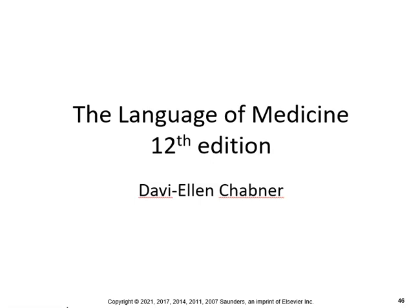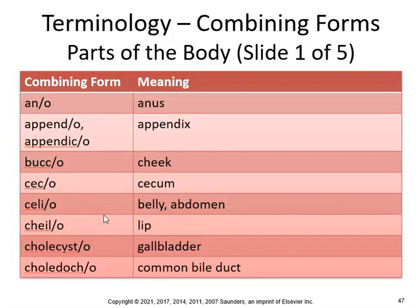Now we get to the true medical terminology section of the digestive system. So this is where you want to concentrate on. An is the anus. Appendo, appendic, is appendix.